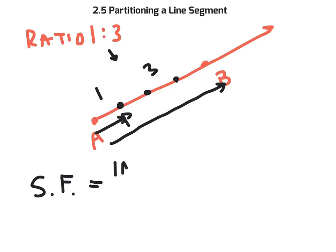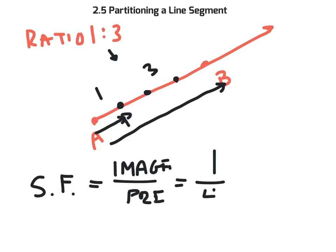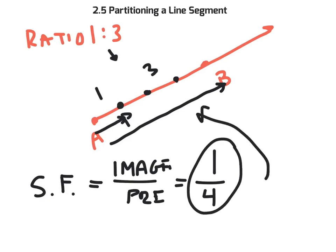Remember, it's always image over pre-image. So this would be 1 over 4. This makes sense because it definitely contracted — it used to be all the way out here, and now we're back here. Take a look at the connection between this ratio and the scale factor.